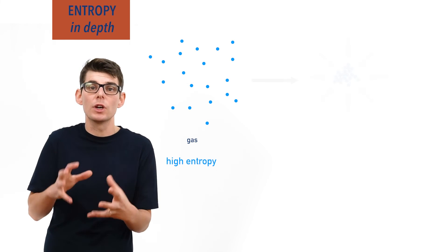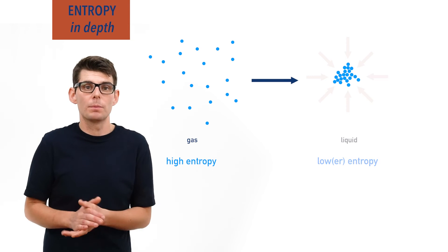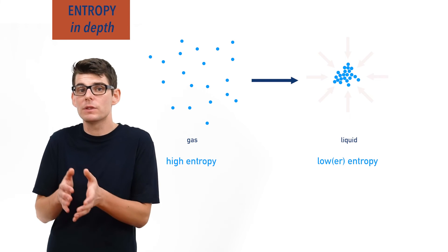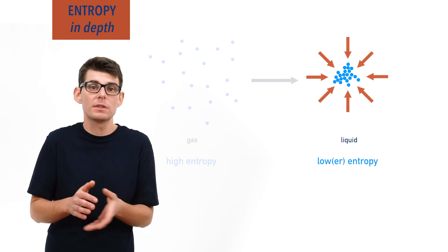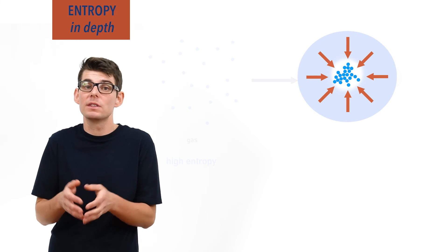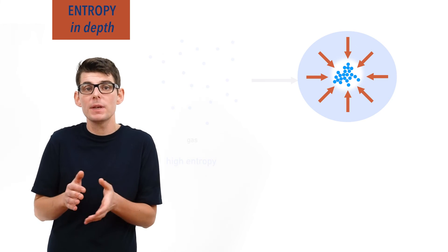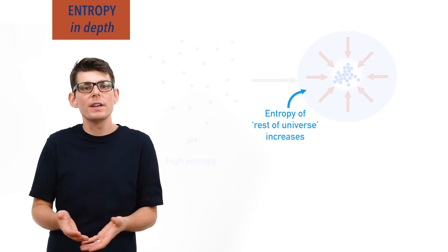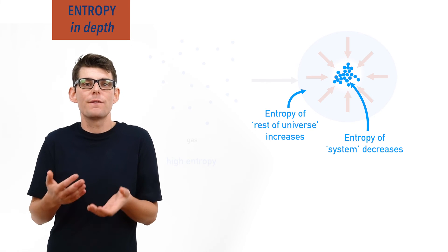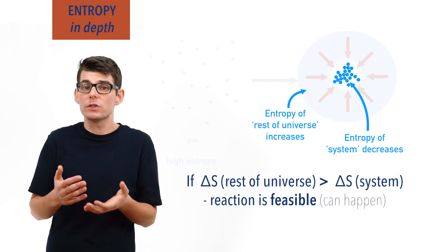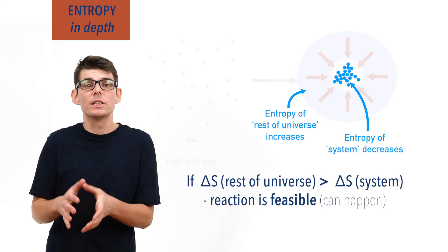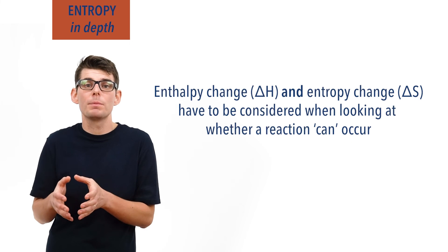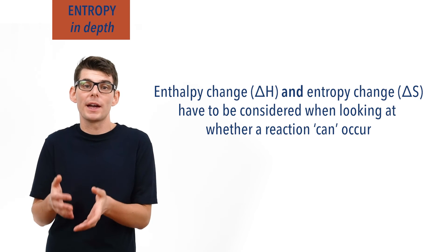For example, you can take a gas system that has a high entropy and put it under high pressure to force it to become a liquid — lower entropy. The entropy of the system may have decreased, but the energy required to pressurize the gas will have had to come from another process in which entropy must have increased in some way. As long as the entropy increase for the rest of the universe is greater than the decrease in entropy of the system, the reaction is feasible. This is why entropy is so important to chemists — it isn't just the enthalpy changes in a reaction we have to look at; both enthalpy and entropy change must be considered when looking at whether a reaction is able to occur.